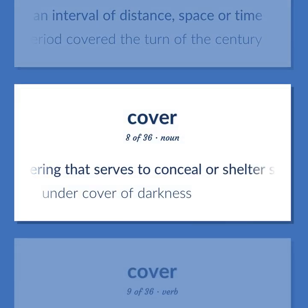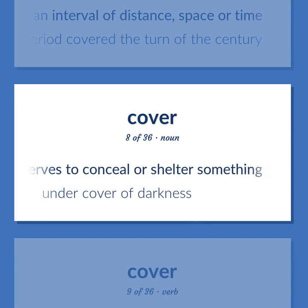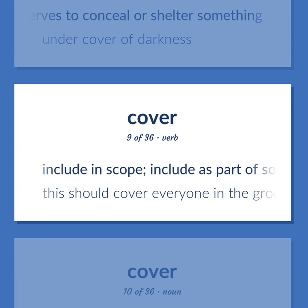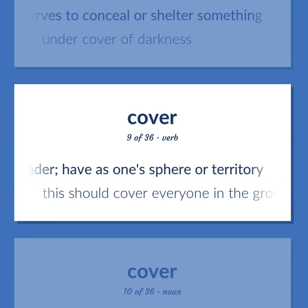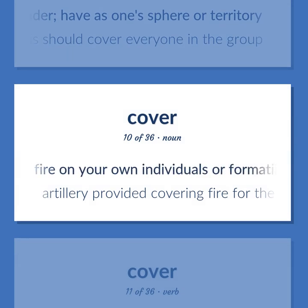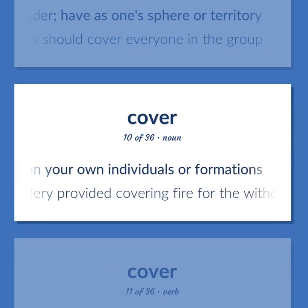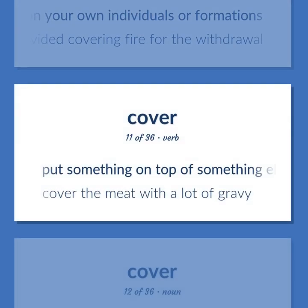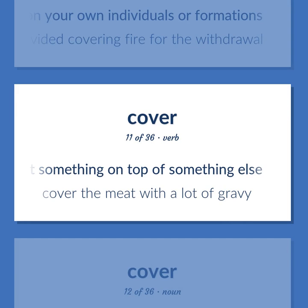A covering that serves to conceal or shelter something. Under cover of darkness. Include in scope; include as part of something broader; have as one sphere or territory. Fire that makes it difficult for the enemy to fire on your own individuals or formations. Artillery provided covering fire for the withdrawal. Put something on top of something else. Cover the meat with a lot of gravy.